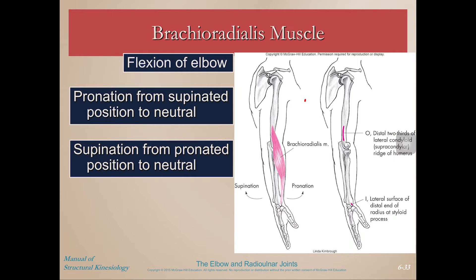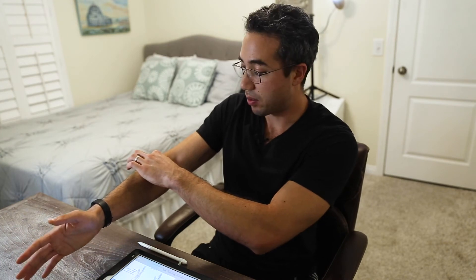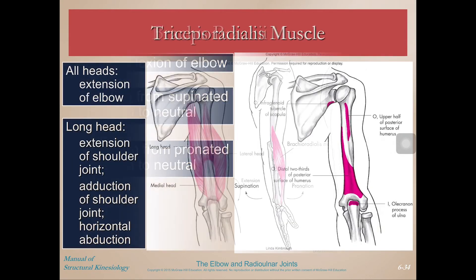Brachioradialis is that muscle that is a little complex because it has two seemingly opposite actions. Looking at how the fibers are running, it crosses the elbow, so we can tell it does elbow flexion — and it is particularly strong in elbow flexion when you are in between a pronated and supinated grip. So if your palms are facing your body and you're doing what we call hammer curls, that's really going to hit the brachioradialis. But if you pronate, those muscle fibers are stretched, so contracting them will shorten you back into that neutral position. If you supinate, those fibers are stretched in the other direction, so shortening them brings you back to neutral. Brachioradialis does flexion, pronation, and supination.